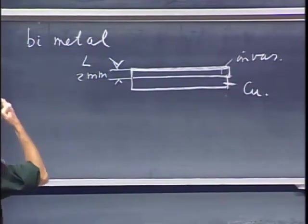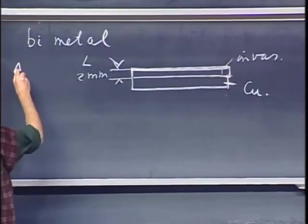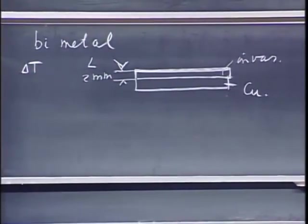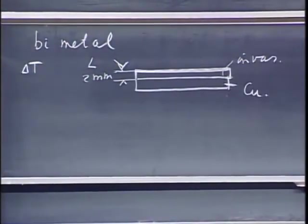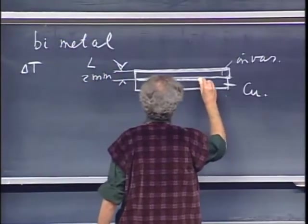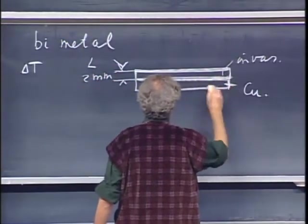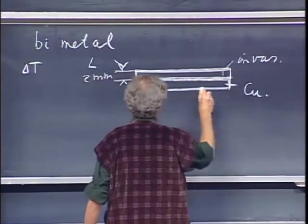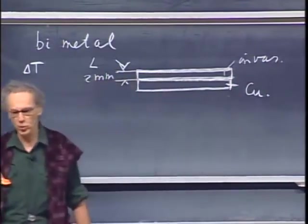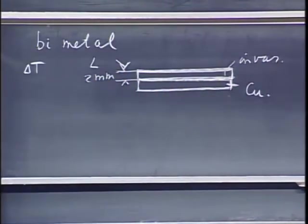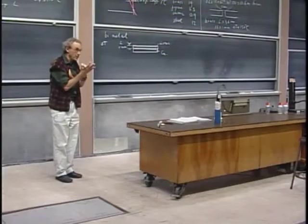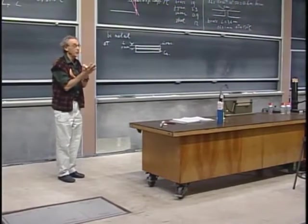And suppose I make, just as a working example, I make the thickness of each one of them two millimeters. And I'm going to heat it. I'm going to heat it, increase in temperature delta T. I'm not interested, really, in knowing how long the copper gets and how long the invar gets, but I'm very interested in knowing the difference in the length between the two.